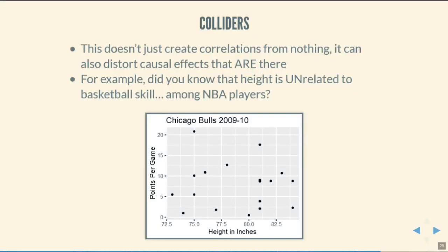I'm going to leave you with one more example of how a collider can mess you up — and that is sometimes it can actually make you see no relationship when in fact there is one. For example, what do you think the effect of being tall is on being good at basketball? Probably pretty good — being tall gives you an advantage in basketball. However, did you know that within the NBA, there's no relationship between height and how good you are? If you look at the number of points that you score and all sorts of different metrics, there's just no relationship. Here's a graph looking at the relationship between points scored and height — in a particular team, there's no real relationship there.